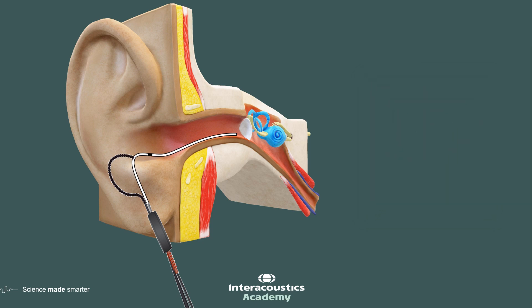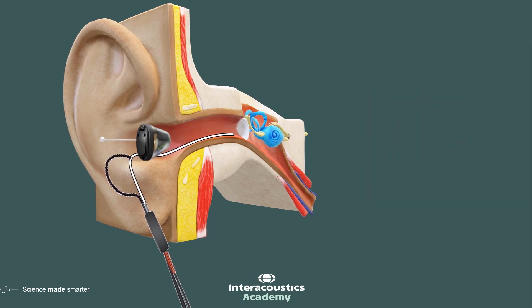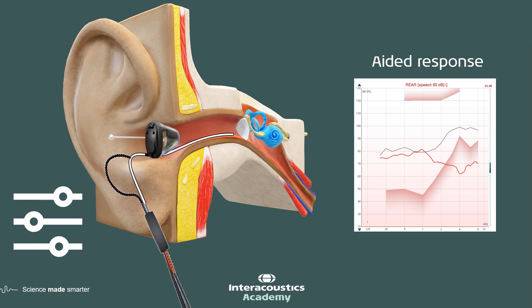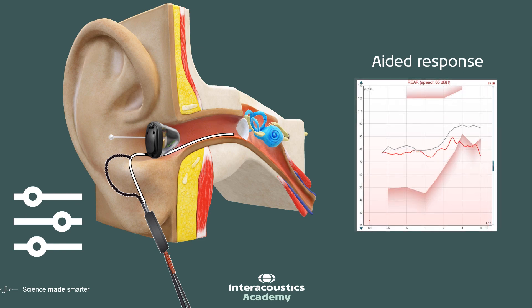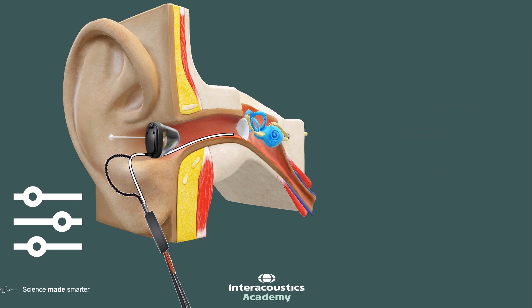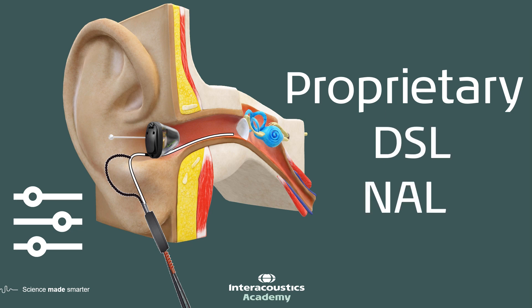We can then place a hearing aid in the ear canal and play that same sound again, measuring the response at the eardrum with the probe microphone — now we have an aided response. That aided response can then be adjusted in the hearing aid fitting software to bring it closer to the target. The target is the grey line shown on screen, and the red line is the aided response. That target is defined by the prescription formula chosen — we could use a proprietary formula, DSL, or NAL. However, the decision-making process around choosing these is outside the scope of this lecture.